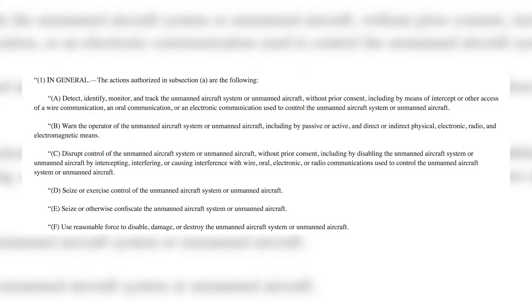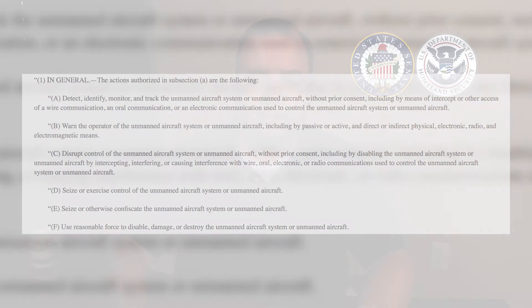In drone news, the Department of Homeland Security is asking the Senate to pass S-2836, named the Preventing Emergency Threats Act of 2018. The law would allow the Department of Homeland Security to detect, identify, monitor, and track unmanned aircraft systems. It would also allow them to disrupt control, seize or exercise control, or confiscate unmanned aircraft. Finally, the Department of Homeland Security would also have the authority to use reasonable force to disable, damage, or destroy the unmanned aircraft system or unmanned aircraft.